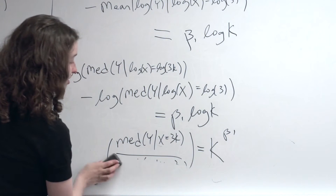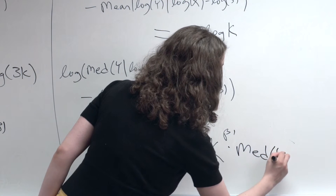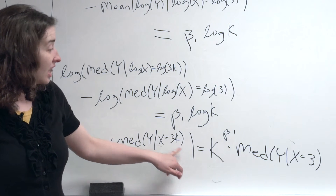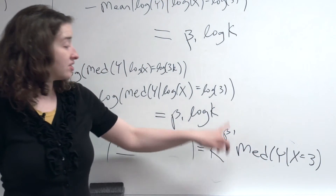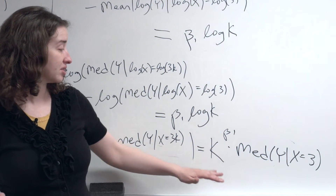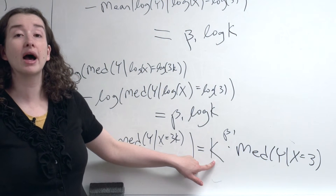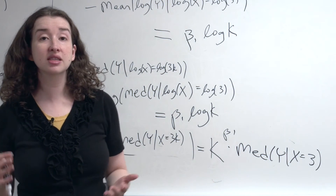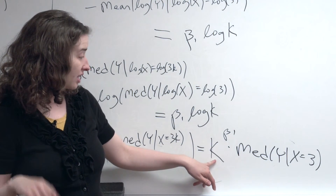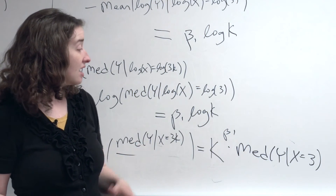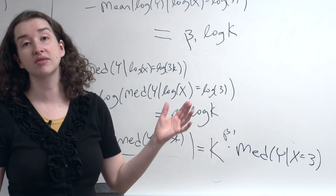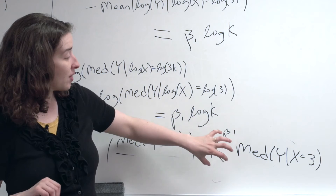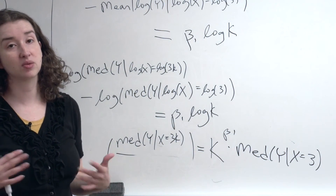Another way to say the same thing: multiply both sides by the denominator. The median of y when x equals 3k equals k^beta1 times the median of y when x equals 3. For any particular scenario this is a fairly simple statement, because we'll pick some k — like 2 — to find out what happens to y when x is doubled. Beta1 is our estimate of the slope when both x and y are on the log scale, so we have an estimate of this number. So we have something like 2 raised to some estimated beta1, and that tells us by how much the median of y is multiplied when x is doubled.